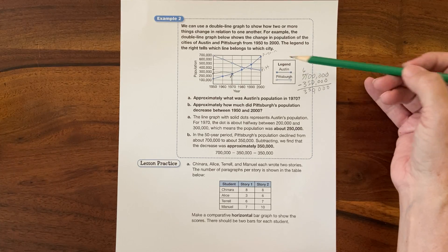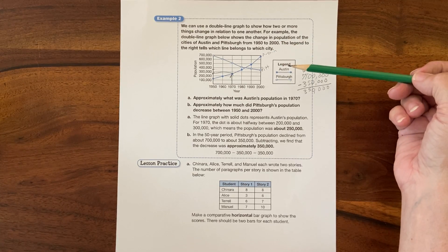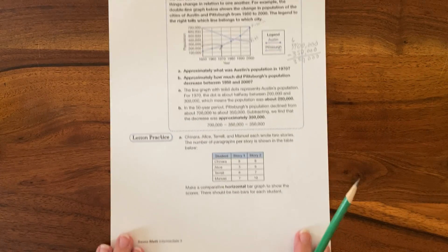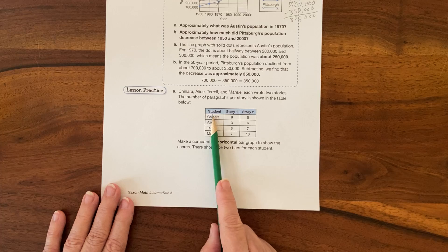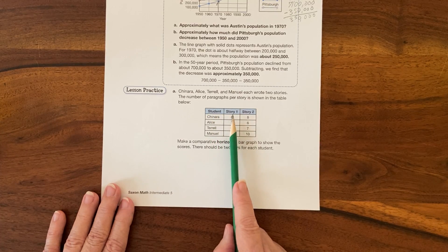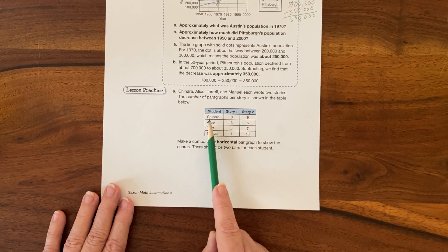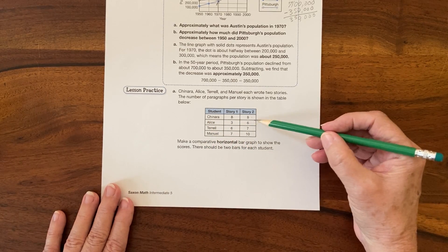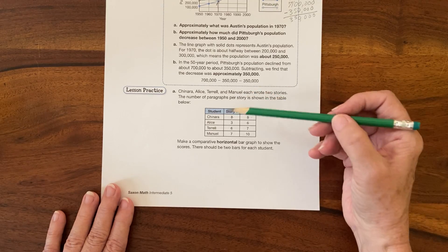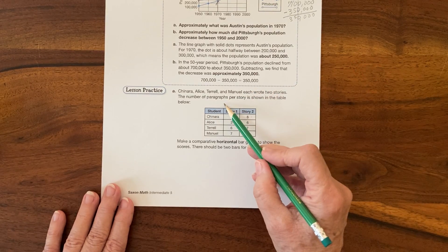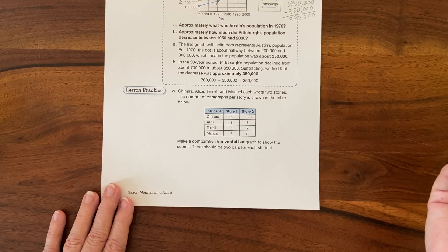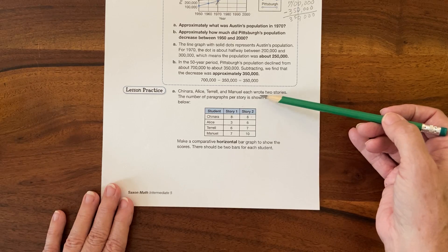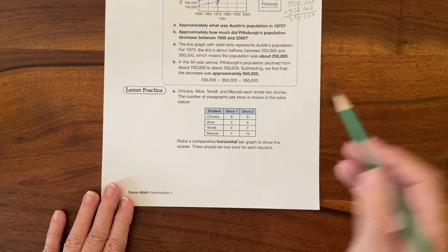So I see that it decreased again. It's looking at what information they're providing in what format they're providing it. Okay, so lesson practice. I've got a student, they each wrote two stories - there's the student, here's your first story, here's your second story. This tells how many paragraphs per story. Again I like a title, so this would be paragraphs per story or something.